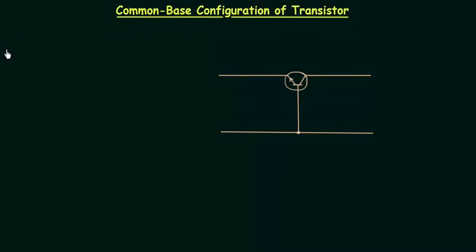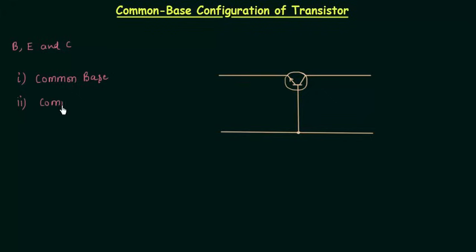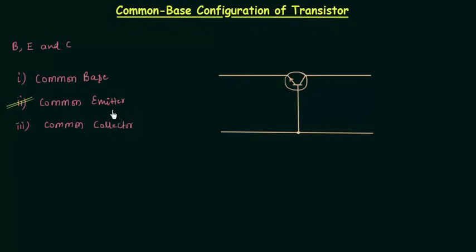A transistor is a three-terminal device with terminals: base, emitter, and collector. Because of this, we have three transistor configurations: common base configuration, common emitter configuration, and common collector configuration. Out of these three, common emitter configuration is mostly used because of its various advantages.